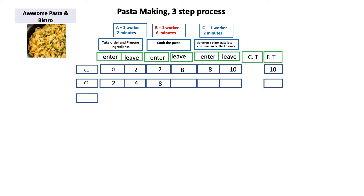Customer two's order can only enter process step B at time equals eight minutes because process step B is busy with customer one's order. It comes out of process step B at t=14 minutes. It then goes on to process step C at t=14 — since process step C is available, it leaves at time equals 16 minutes. So customer two gets his plate of pasta at time equals 16 minutes.